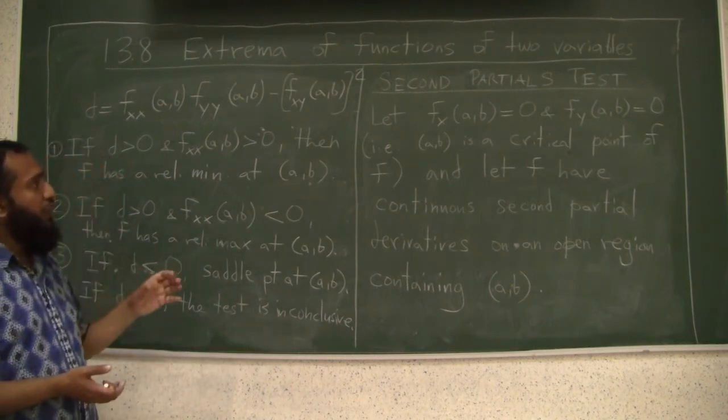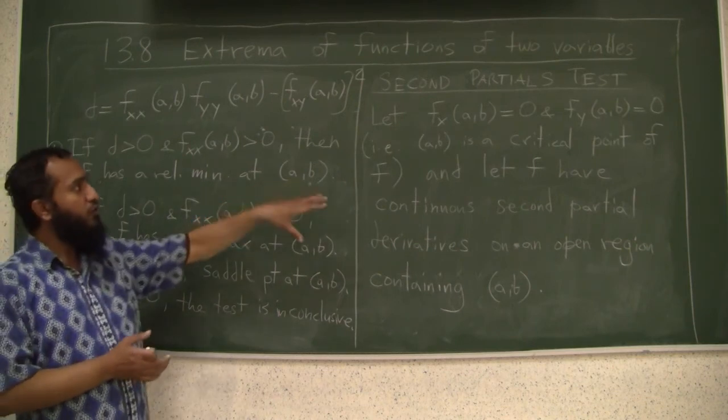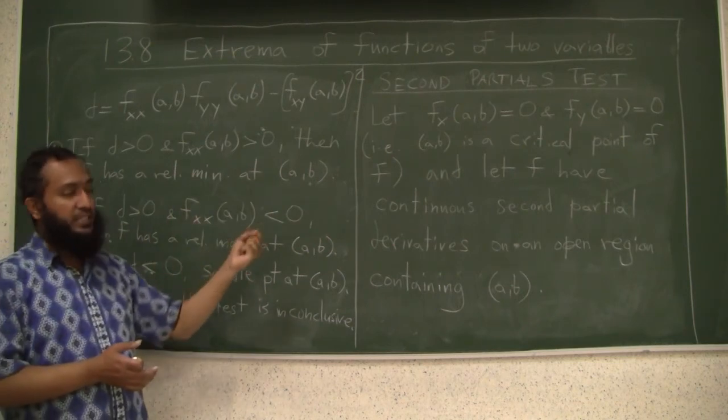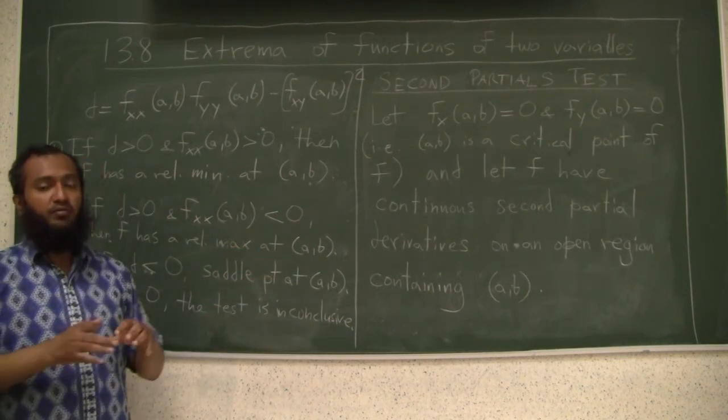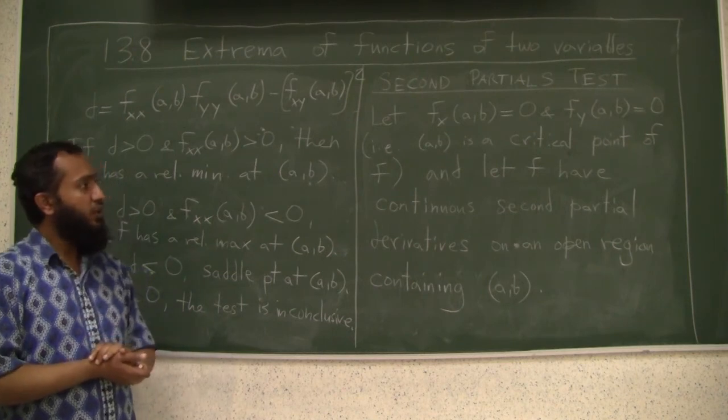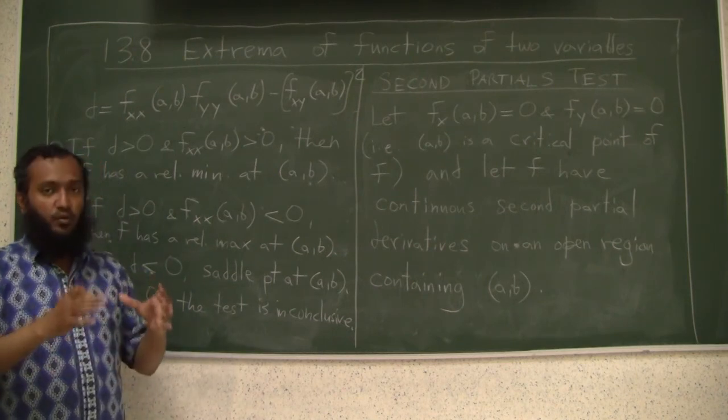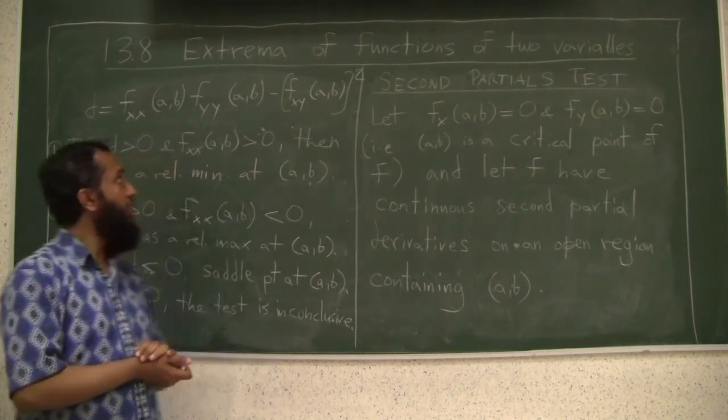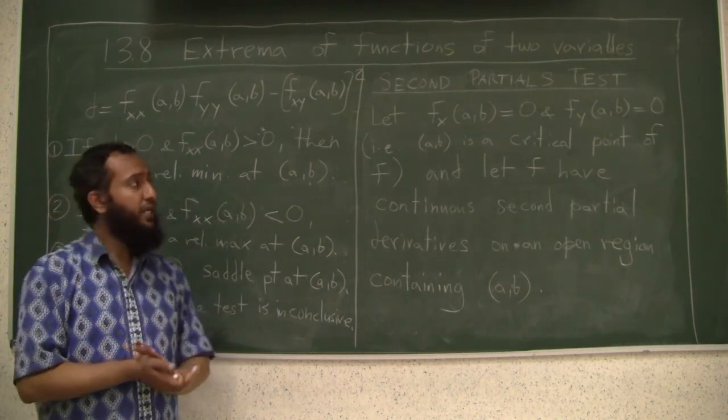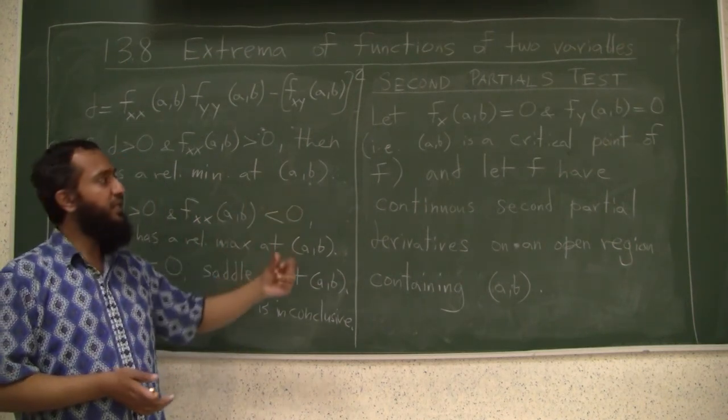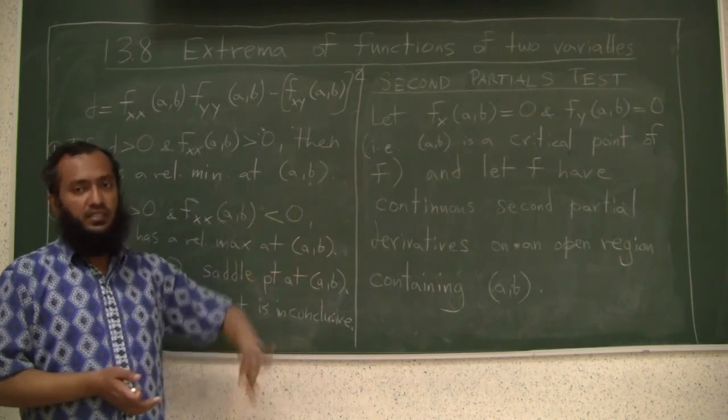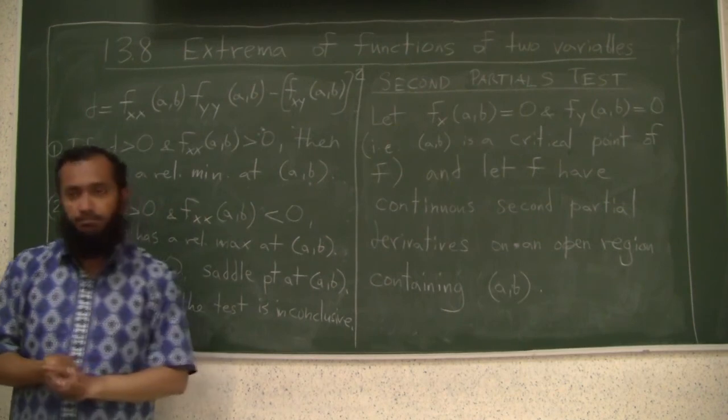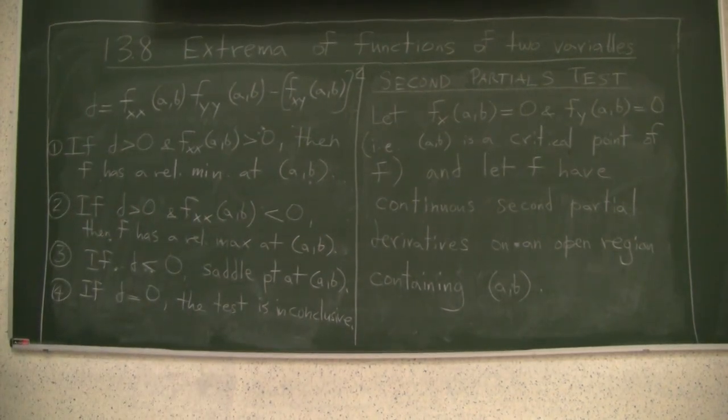So you should now look at some examples in the book that follow this material, the second partial test in the same section 13.8 to see how this test is used. And also look at the example on how we find absolute values, absolute minimum and maximum over a closed bounded region. With that, we conclude section 13.8 on extrema of functions of two variables. Three variables work similarly, although the second partial test is a bit different for that. Okay, that finishes our section 13.8.